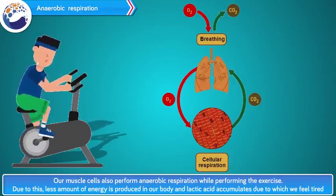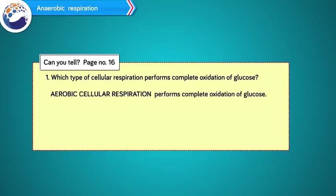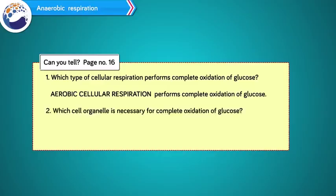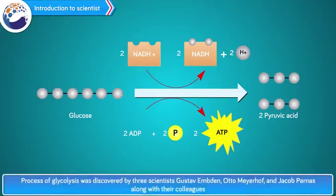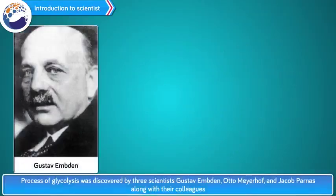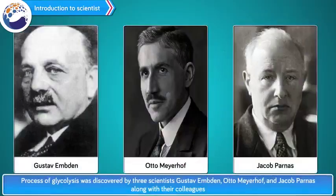Question 1: Which type of cellular respiration performs complete oxidation of glucose? Question 2: Which cell organelle is necessary for complete oxidation of glucose? Answer: Mitochondria is the cell organelle necessary for complete oxidation of glucose. The process of glycolysis was discovered by three scientists — Gustav Emden, Otto Meyerhoff and Jacob Parnas — along with their colleagues.